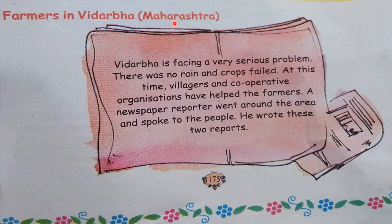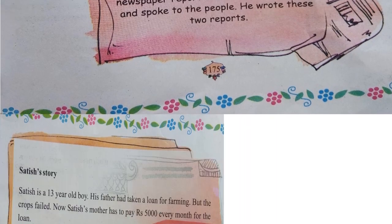Here is a story set in Vidarbha, Maharashtra. Vidarbha is a place in Maharashtra facing a very serious problem — there was no rain and crops failed. Villages and cooperative organizations helped the farmers. A newspaper reporter went around the area, spoke to the people, and wrote two reports. He has written two word problems for us and we have to solve them.